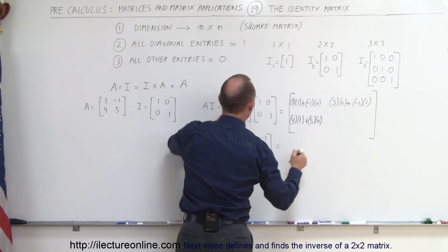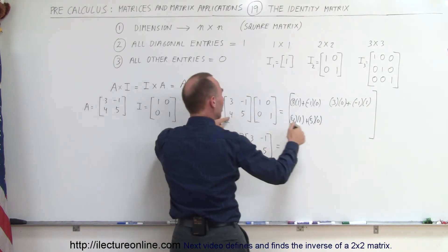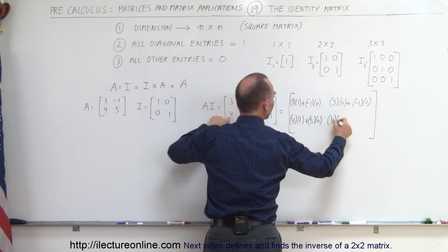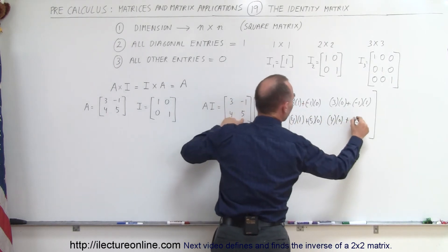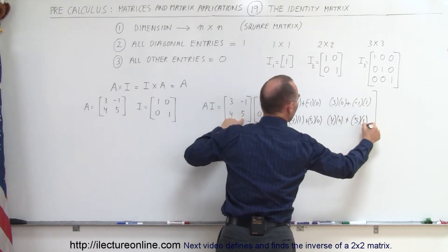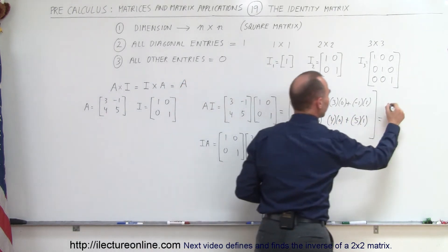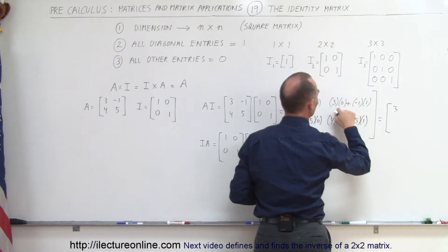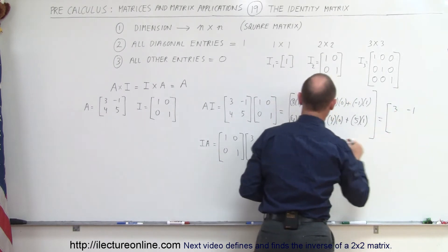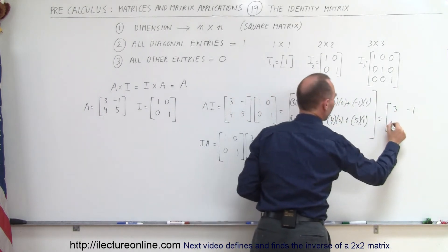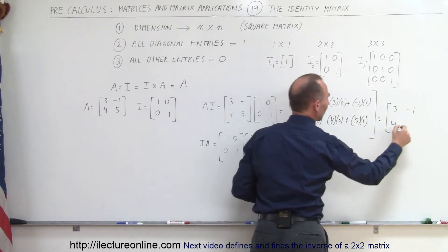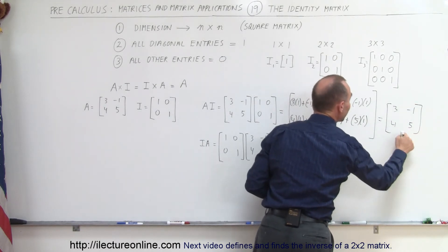Good thing that I checked. And finally, this row times this column, so we get 4 times 0 plus 5 times 1. And then, if we simplify that, so this goes to 0, so we get 3. Here, this goes to 0, so we get negative 1. This goes to 0, so we get 4. And this goes to 0, so we get 5. And that should indeed be the A matrix. And so, let's check. 3, negative 1, 4, 5. And so, indeed, that is correct.